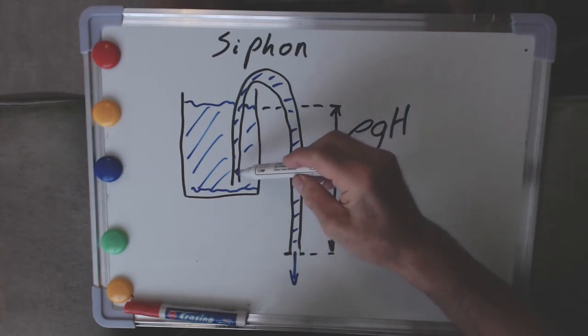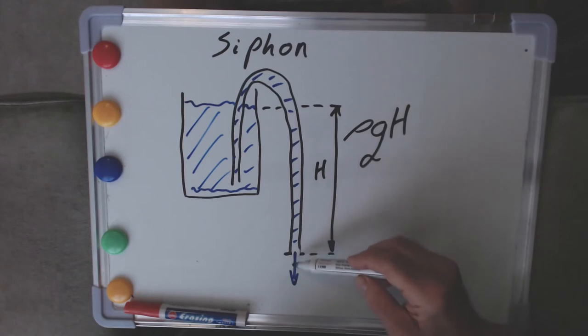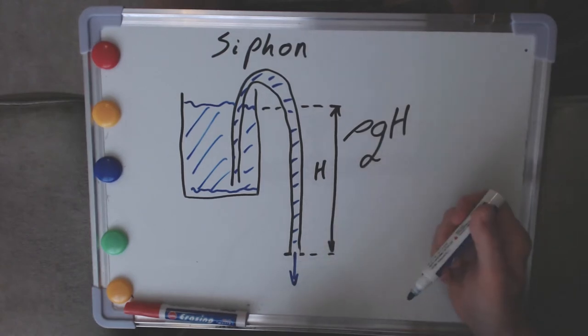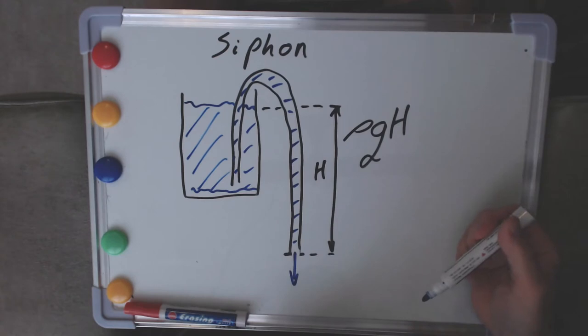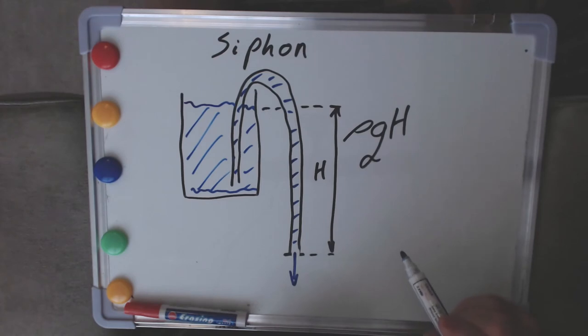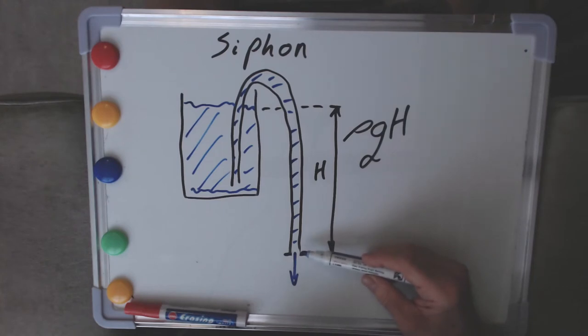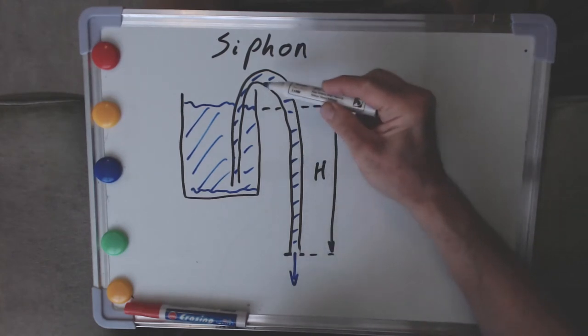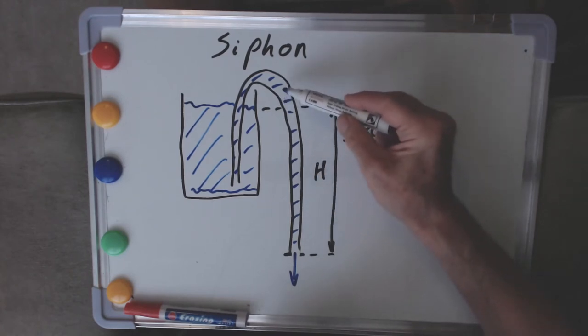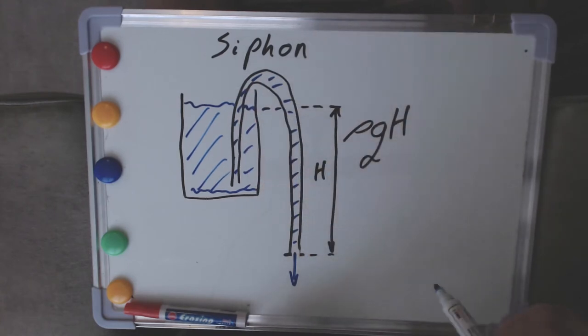It used to be thought that we could explain this using a model of a chain coming out over the side of a bucket, so the weight of the chain down here would actually pull the rest of it out. And that was applied to siphons in a very similar way, so each of the molecules in the water would be pulling on the molecules just above it and actually dragging the water out as though it was a chain.